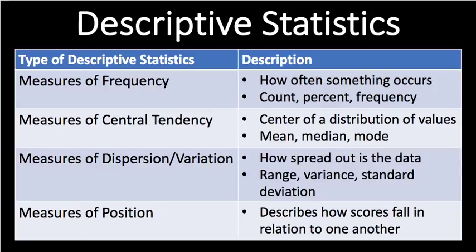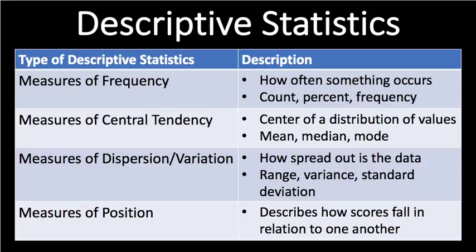Measures of dispersion or variation describes how spread out the data is. For example, looking at test scores — somebody scored 90, someone else scored 80, 70 — you write all of these down for the whole class. When you measure dispersion, you want to know: is everybody getting close to 90, or do we have people getting 70s and 60s? You could use range, variance, and standard deviation, which is a very important topic that will come up later in the biostats series.